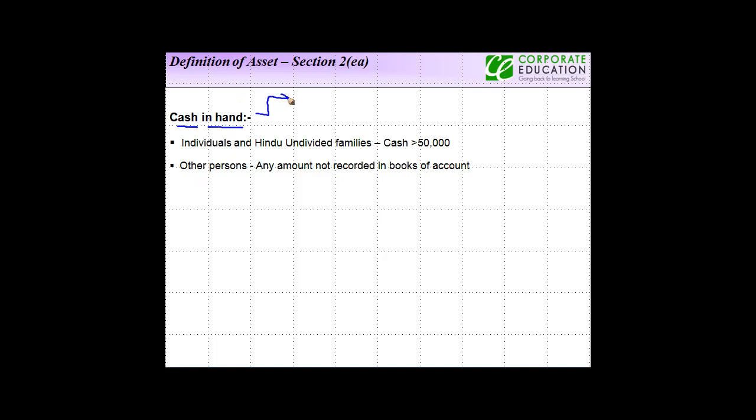Cash in hand is included as an asset for wealth tax purposes if the assessee is an individual or HUF where it exceeds 50,000. So if it is 49,000, it is not included; if it is 51,000, it is included.